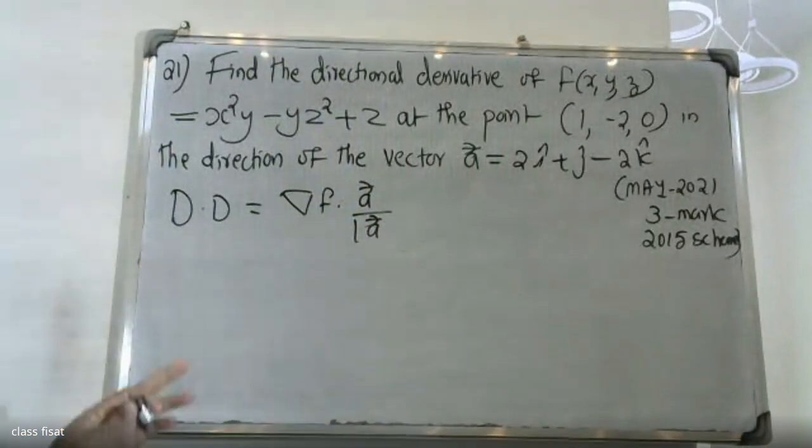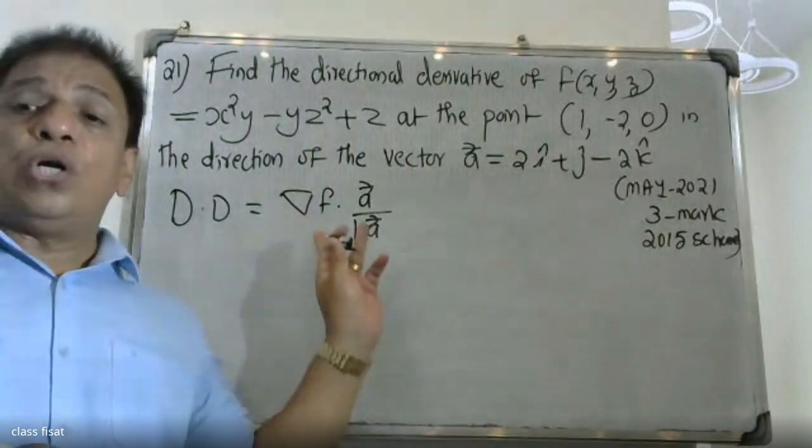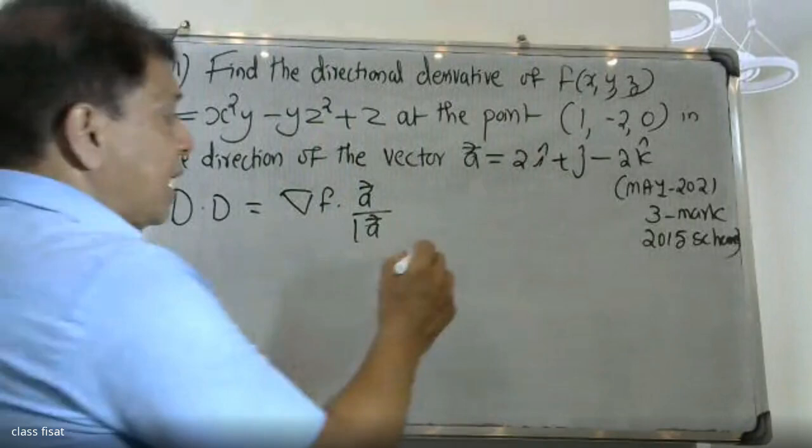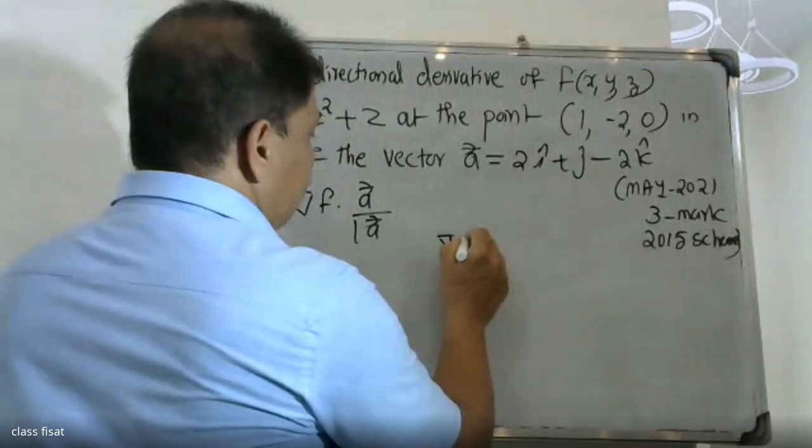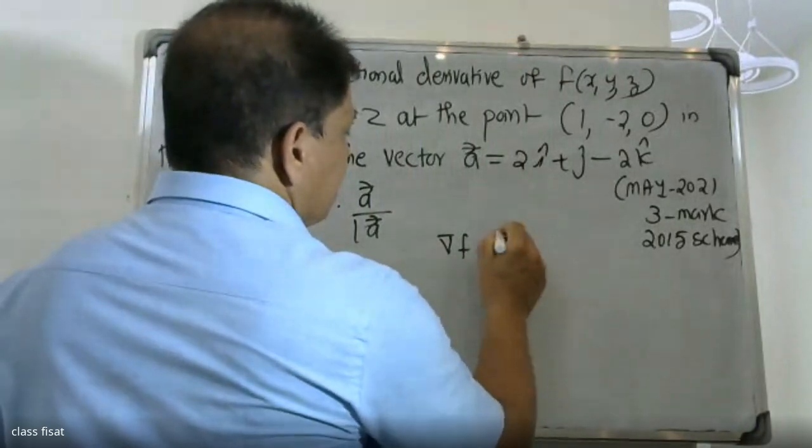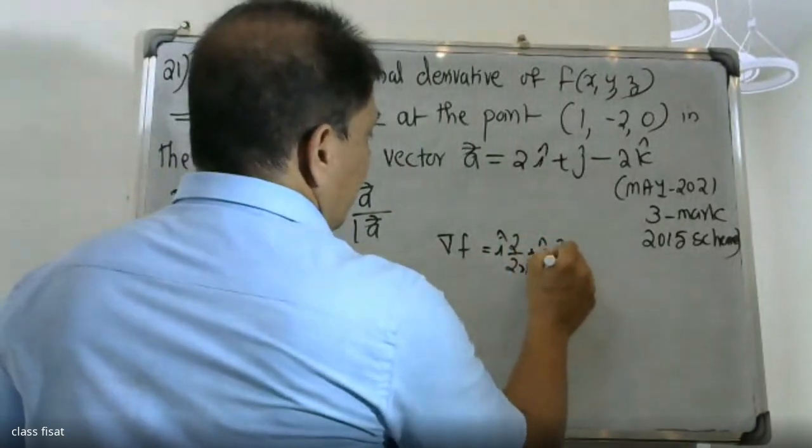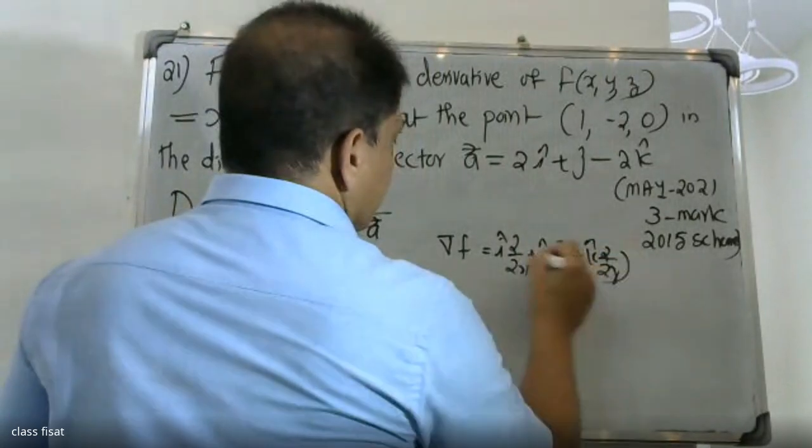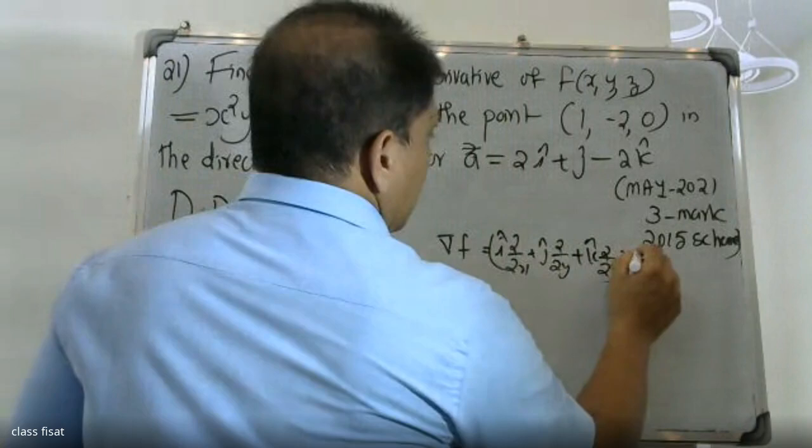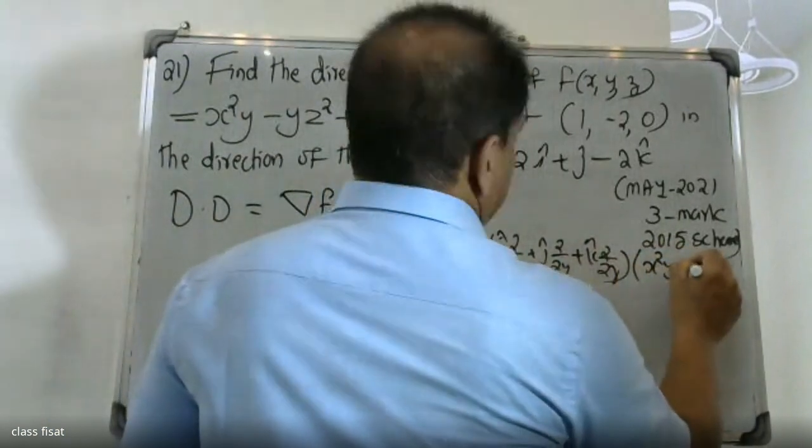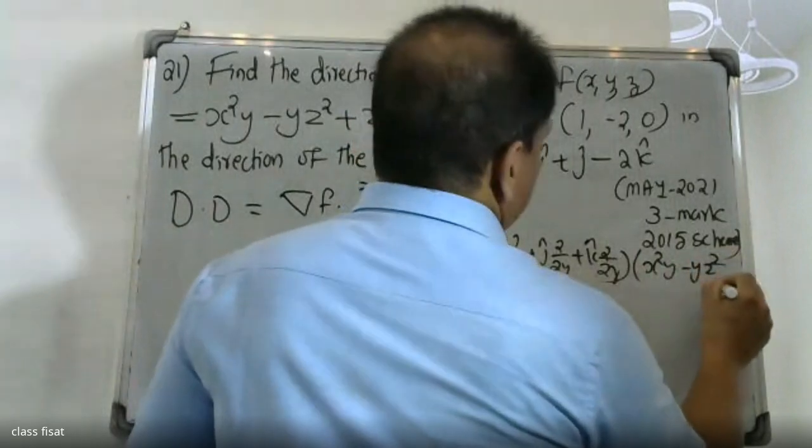I'm going to use the formula. Now then, you have i ∂/∂x plus j ∂/∂y plus k ∂/∂z applied to x²y - yz² + z.